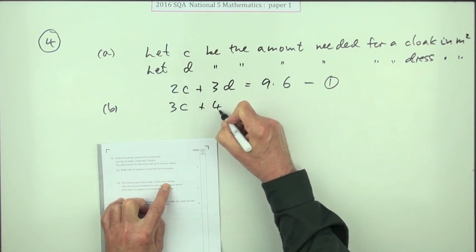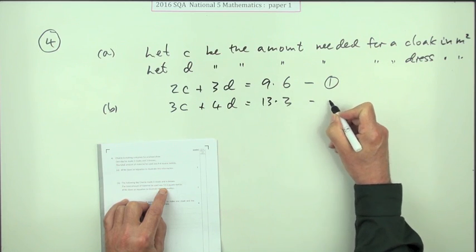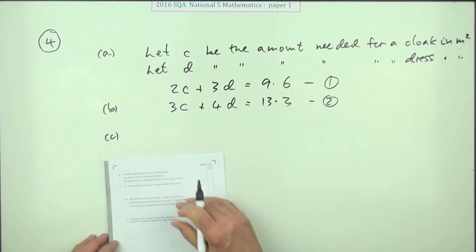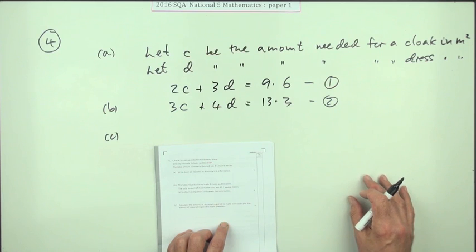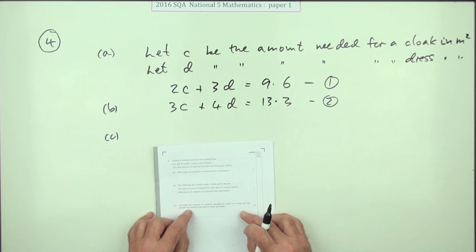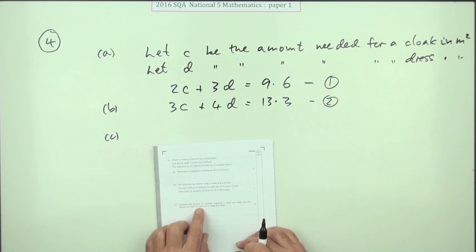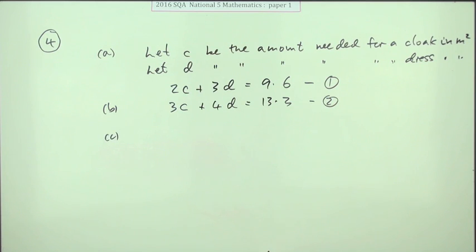That's two marks so far. And then part C: calculate the amount of material to make one cloak and the amount of material required to make one dress. That's just to remove any ambiguity about whether you're meant to have two separate answers or add them together. If it just said the amount of material required to make one cloak and one dress, then you may have put them together as a total, so it's just to specify them separately.